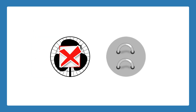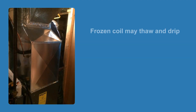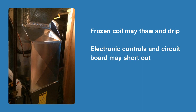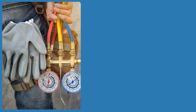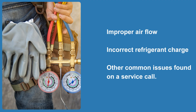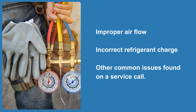If the furnace blower motor stops working, this can result in the air conditioning coil freezing up, which can damage your furnace. Most of today's gas furnaces contain electronic controls and do not like to get wet, so when a frozen coil above the furnace starts to thaw and drip water onto the electronics, the circuit board will usually short out and will need to be replaced. A skilled technician will properly diagnose any issues with your air conditioning systems, such as improper airflow, incorrect refrigerant charge, or any other common issues found on a service call.